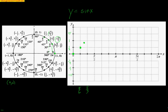At pi over 2, the y-coordinate is 1, so we end up at 1 right there. Notice how the y-value kept getting bigger: it started at 0, grew to 1/2, grew to radical 2 over 2, grew to radical 3 over 2, and finally grew to 1.